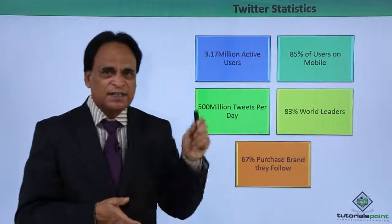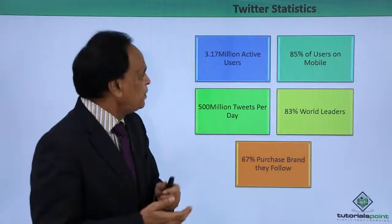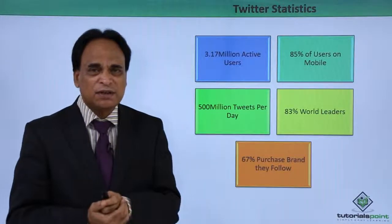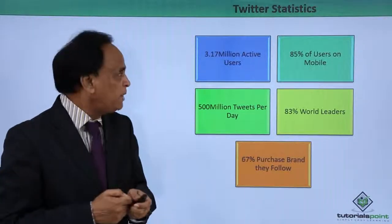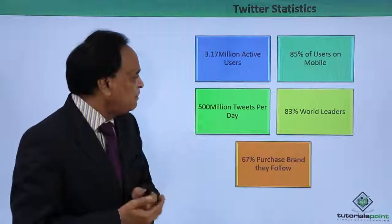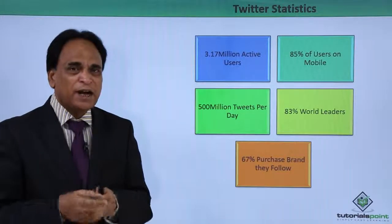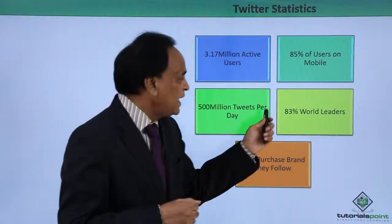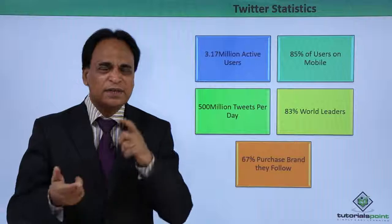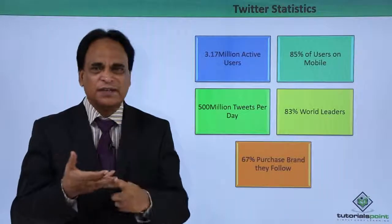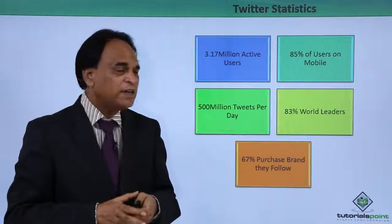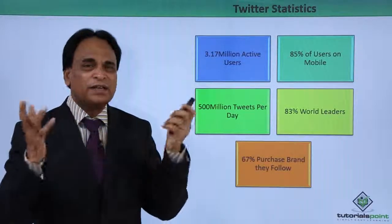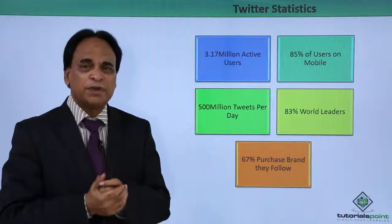Twitter statistics — let us check these figures. There are 3.7 million active users on Twitter, and 85 percent of users are accessing Twitter from mobile. You have about 500 million tweets sent every single day. 83 percent of the world leaders — the presidents, the prime ministers, the kings — are available on Twitter and they are interacting and engaging with their countrymen and with people around the world.